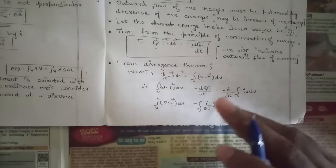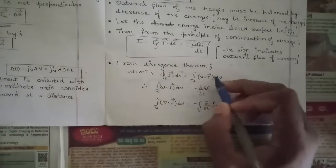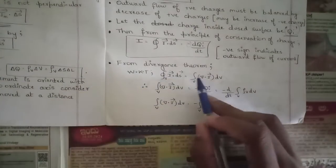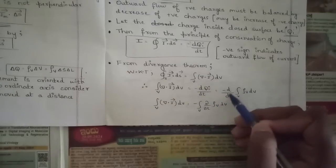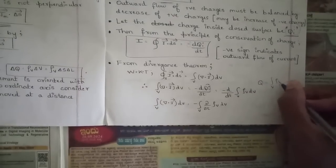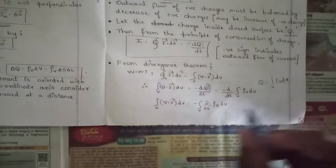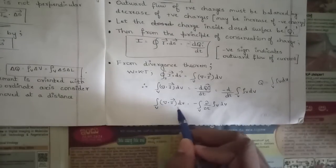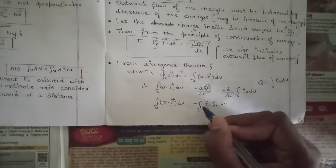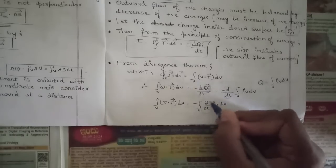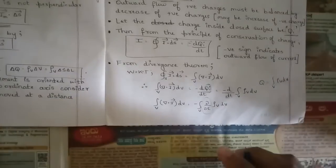So volume integral of (∇·J) dV = -d/dt of Q_i. Since Q_i = volume integral of rho_V dV, substituting gives volume integral of (∇·J) dV = minus volume integral of (∂rho_V/∂t) dV. When differentiation goes inside the integral from the limits rule, d/dt becomes ∂/∂t, giving: ∇·J dV = -∫(∂rho_V/∂t) dV.